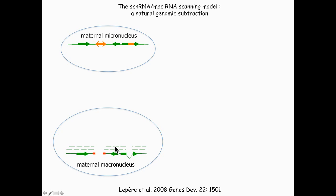Scan RNAs engage in pairing interactions with non-coding transcripts produced from the entire maternal MAC genome on both strands, at very low levels — this transcription has nothing to do with messenger RNA transcription. You can detect it by strand-specific RT-PCR wherever you test it. In the mic, only during meiosis — more precisely prophase of meiosis one — the germline genome is also entirely transcribed on both strands. This results in the formation of double-stranded RNA, which is then diced into 25-nucleotide scan RNA duplexes by the proteins Dicer-like 2 and Dicer-like 3.